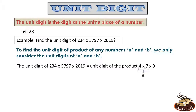4 × 7 = 28; we ignore the 2 and keep 8. Then 8 × 9 = 72. We ignore the 7, giving us a unit digit of 2.